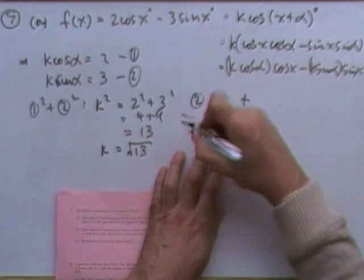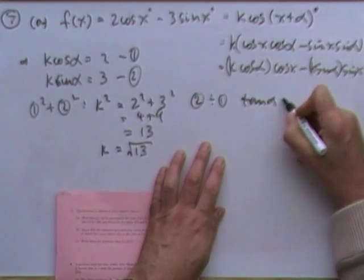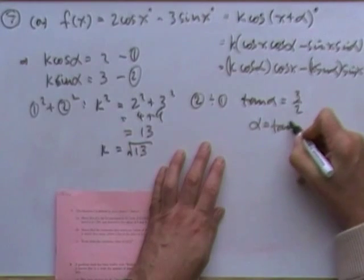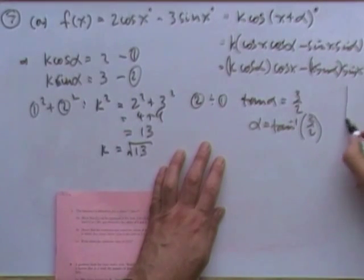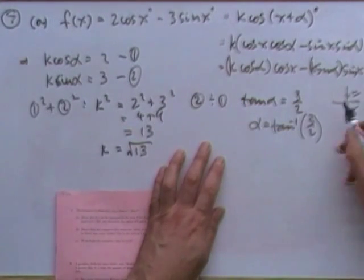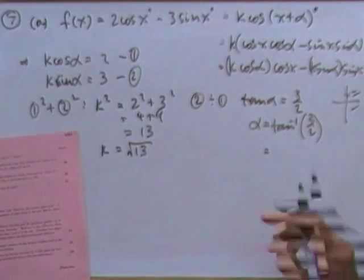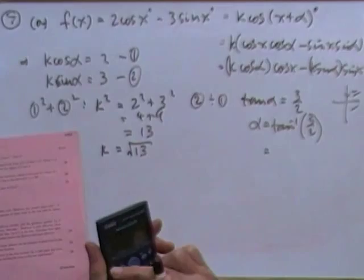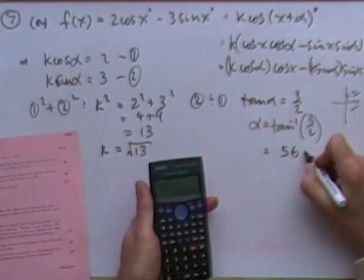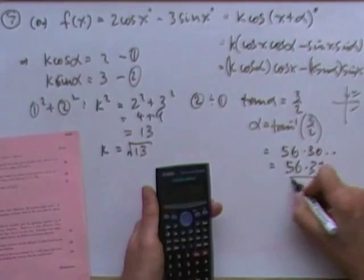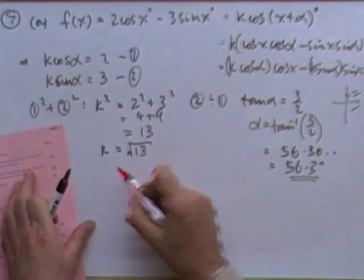And then dividing the two equations in the order of 2 divided by 1, I'll have sin over cos, which means tan alpha will be 3 upon 2. So, alpha is going to be the inverse tan of 3 upon 2. And just as a quick check, they're both positive. The cosine's positive, the sine's positive. So, it's going to be between 0 and 90 for this one. So, you do inverse tan of 3 upon 2, 56.3 degrees. So, that's the first part.